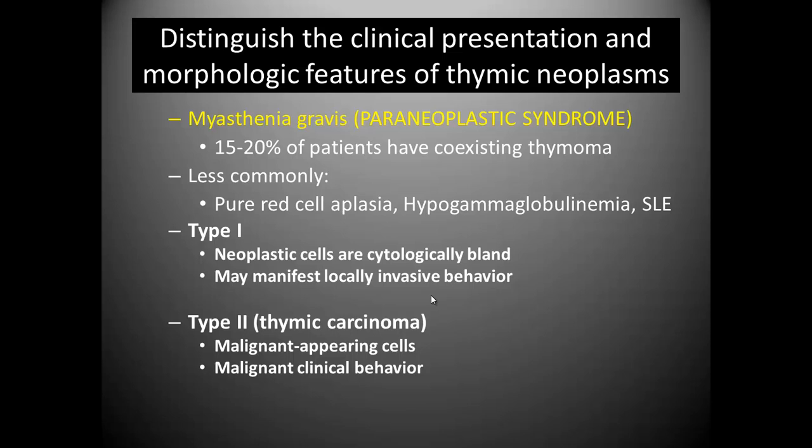Finally, we have the clinical presentation and morphologic features of thymic neoplasms. The thymus develops your T cells and can lead to some diseases. There are two big things to know. First, when you have a thymoma — a mass in your thymus — 15 to 20 percent of those patients have myasthenia gravis, which is considered a paraneoplastic syndrome in this case. So if a patient presents with myasthenia gravis, one of the first things you do is look for a thymoma. If they don't have one, then they have myasthenia gravis in its own right. There are two types: type 1 is locally invasive but if you remove it everything should be fine. Type 2 is thymic carcinoma — a bad one that can metastasize and kill people. So type 1, not so bad; type 2, bad.